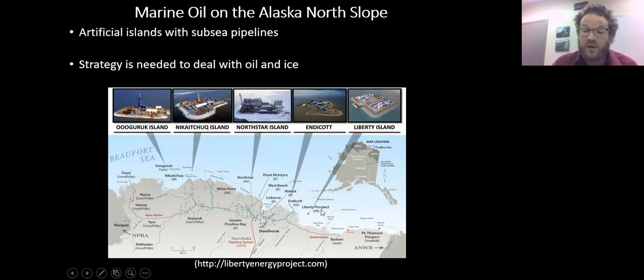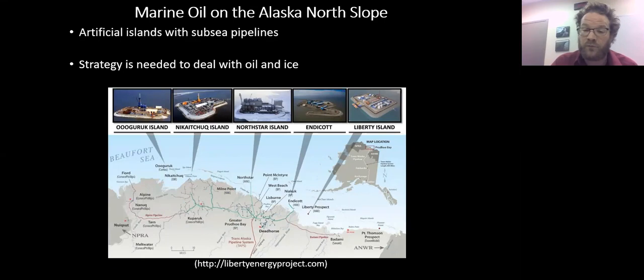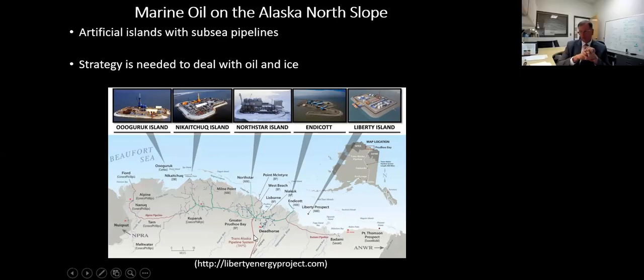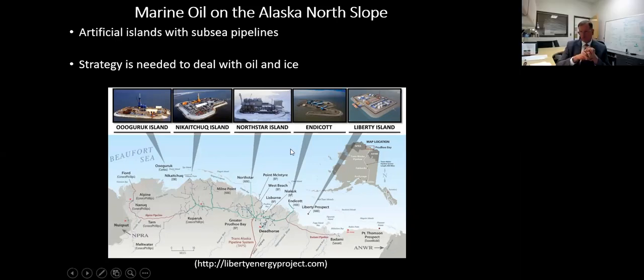Currently most of the operations are centered on the area around the Trans-Alaska pipeline around Deadhorse. Within the marine exploitation of oil on the Alaska North Slope, there is a risk of exploiting oil from ocean islands on subsea pipelines, so we need to have a strategy to mitigate oil on ice.